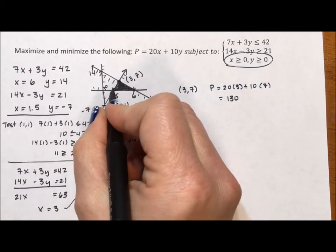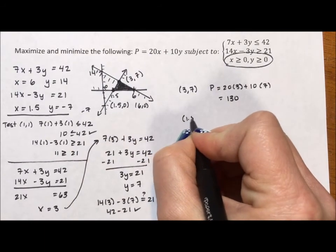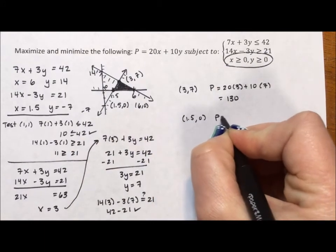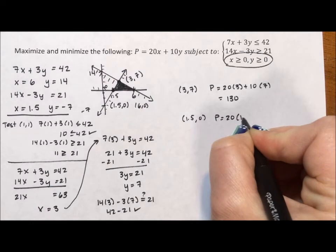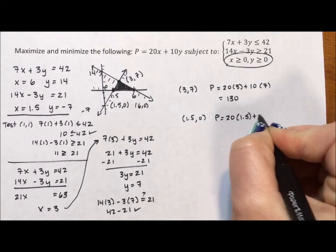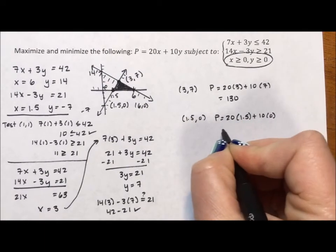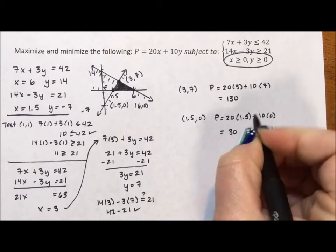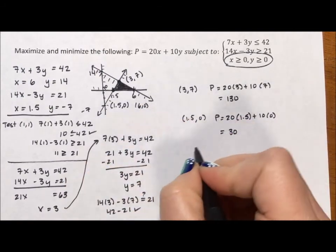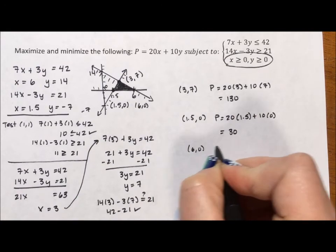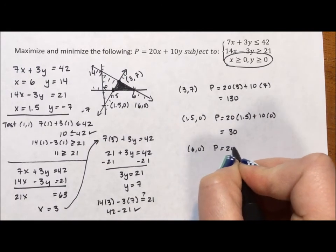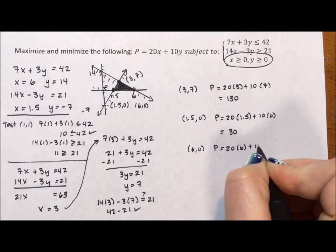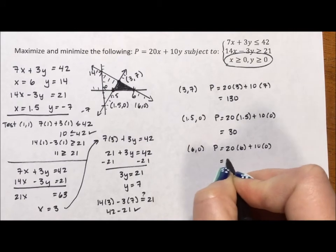Okay, now I'm going to go to this corner, the (1.5, 0). So p is equal to 20 times 1.5 plus 10 times 0 which is going to equal 30. And then I'm going to end at my last corner, this (6, 0). So p is equal to 20 times 6 plus 10 times 0 which is going to give me 120.